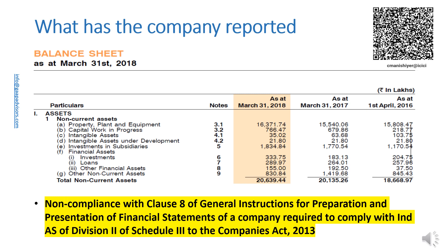Clause 8 of general instructions for preparation and presentation of financial statements of a company required to comply with Ind AS of Division 2 of Schedule 3 to the Companies Act 2013 states that for the purpose of this schedule, the terms used herein shall have the same meanings assigned to them in Ind AS. Therefore, the presentation of line items in the balance sheet, statement of profit and loss, and statement of changes in equity as per Schedule 3 is based on the definition of that item in Ind AS. As investment in subsidiaries meets the definition of financial assets, the company should have presented investment in subsidiaries separately within financial assets.